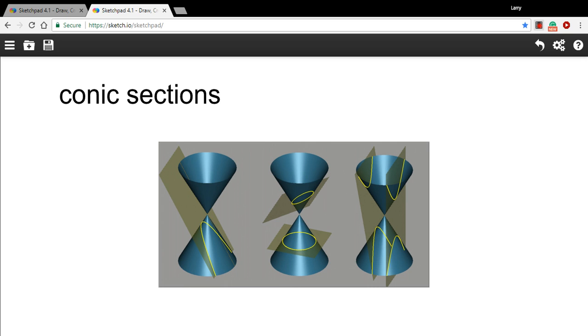This includes circles, ellipses, parabolas, and hyperbolas. You can see here if you slice a cone perpendicular to the orientation of these two cones, you'd get a perfect circle. If you tilt that a little bit, you're going to get an ellipse, an oval shape.